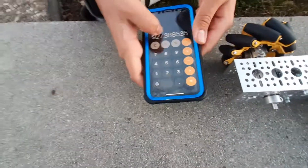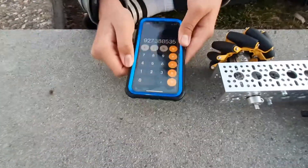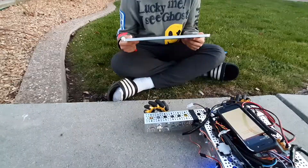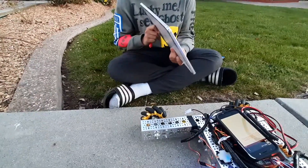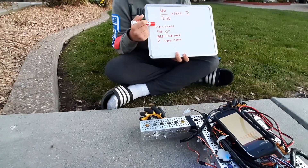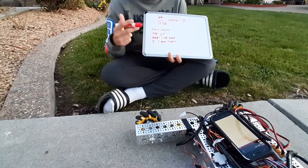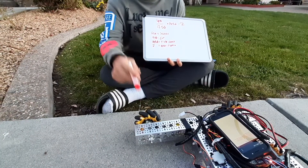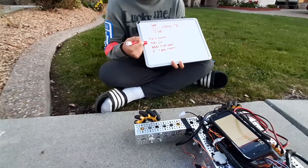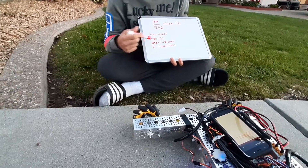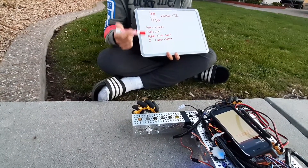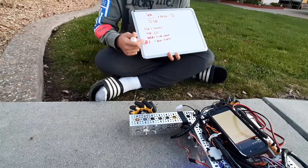So you would want to round to 927 because they can only take integers in the code. As previously stated, 40 is the number of inches we want to go. 12.56 is the circumference of our wheels — your circumference will be different. To find the circumference, do pi times the diameter of your wheel. Our tick count is 145.6 — again, this is just for our motors; for your motors, look at the product page. And finally, 2 is for our gear ratio.